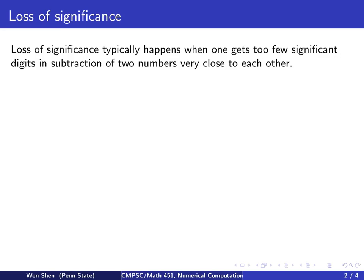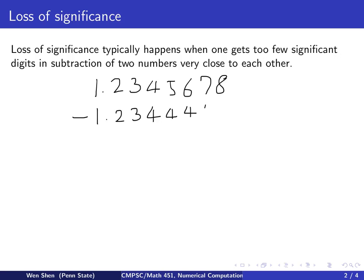Say you have a number, let's say it's 1.2345678 — it has eight significant digits. And you have another number and you want to subtract them from each other. Let's say your other number is minus 1.2344444. The first four places are the same, but afterwards they are different. So the second number also has eight significant digits.